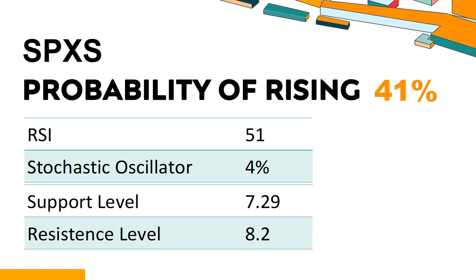SPXS: Analysing the U.S. market with technical indicators. SPXS's 14-day Relative Strength Index (RSI) value was 51. When the RSI is between 50 and 70, it generally indicates that the stock is moderately bullish. This means that the security's price has been rising but has not yet reached overbought levels, which are usually considered an RSI reading of 75 or higher.